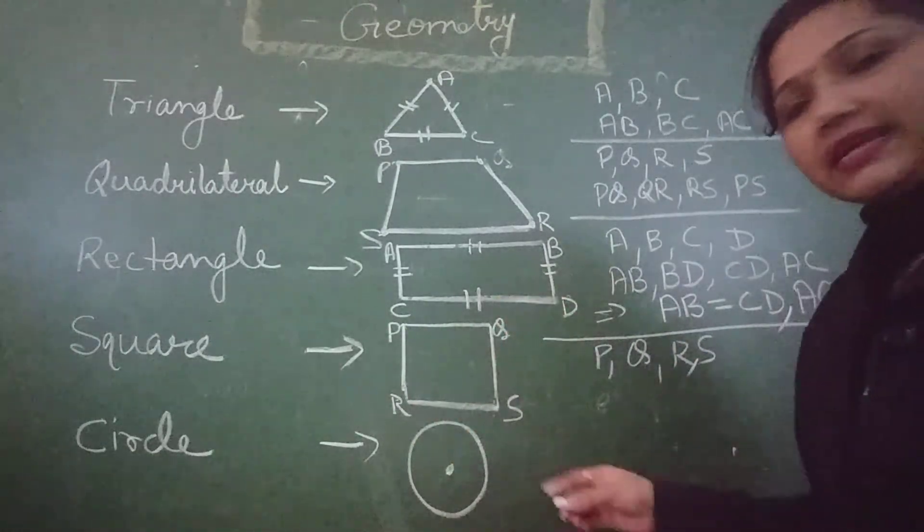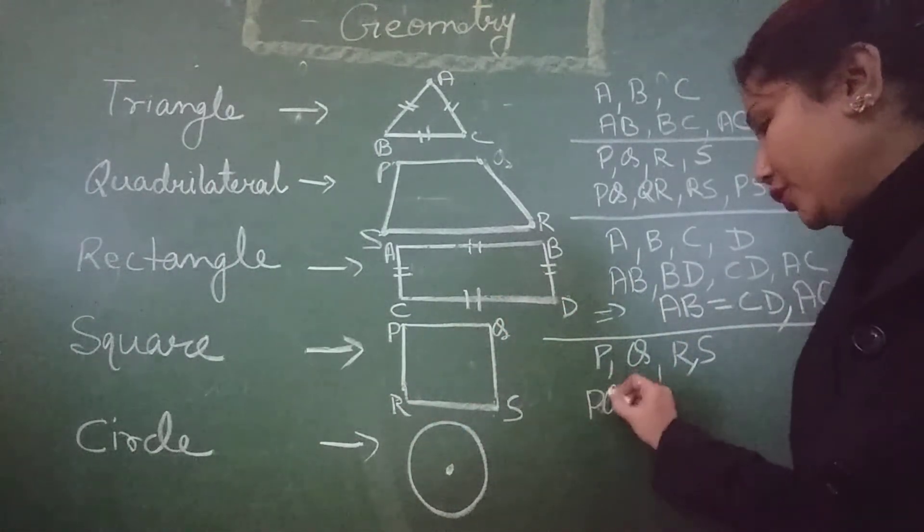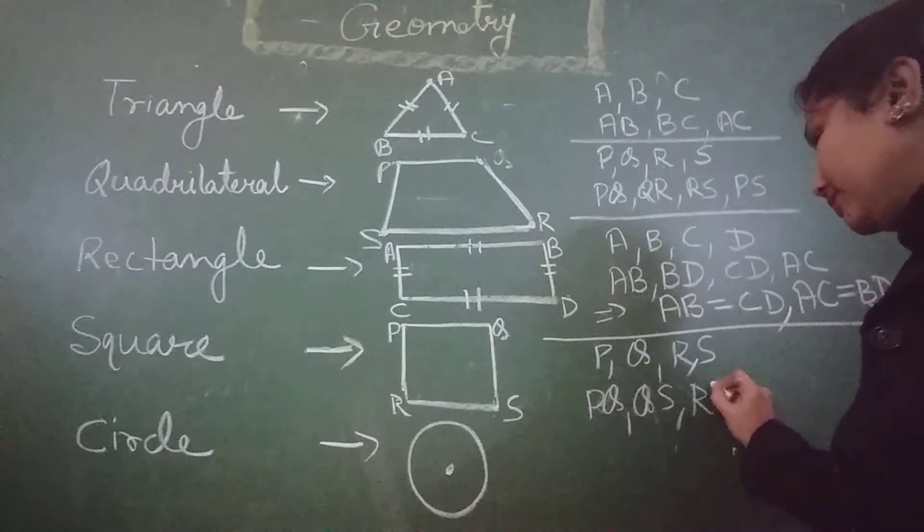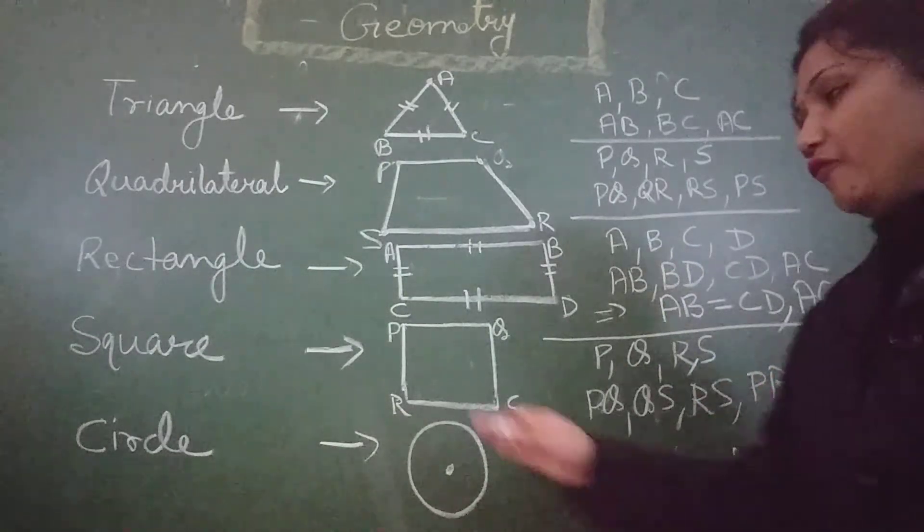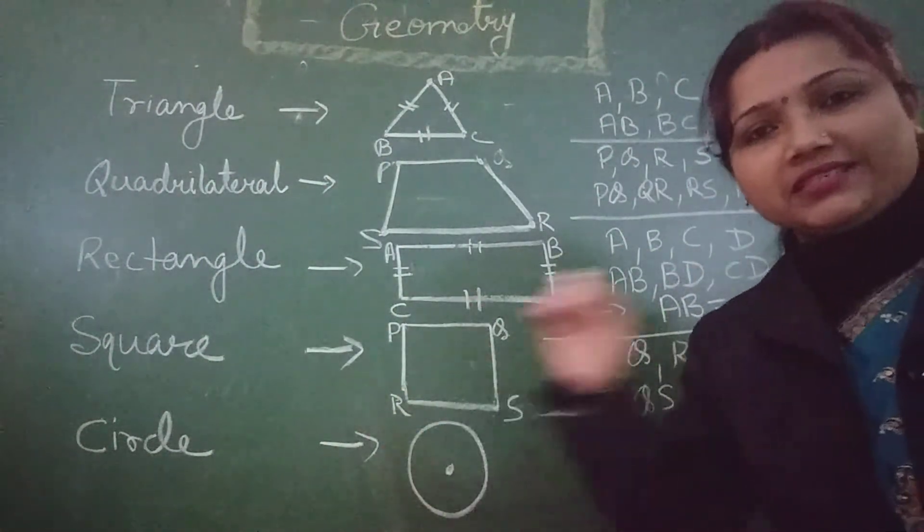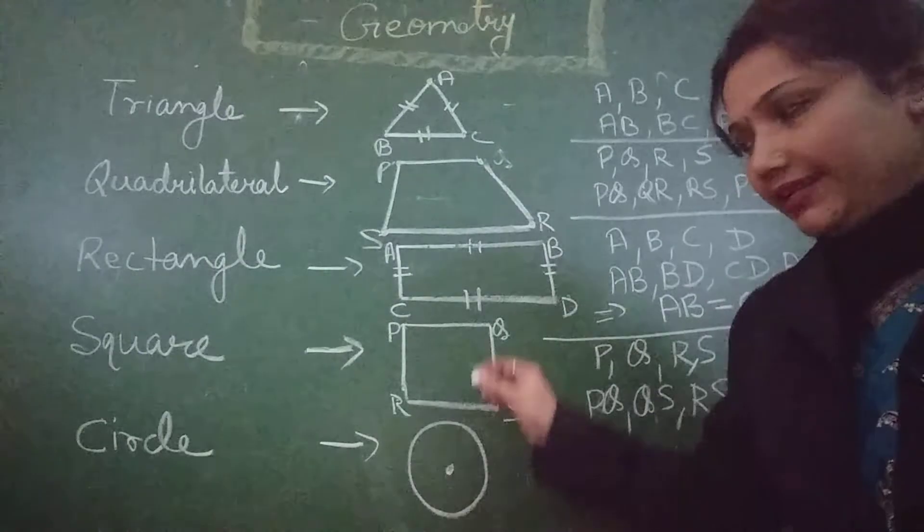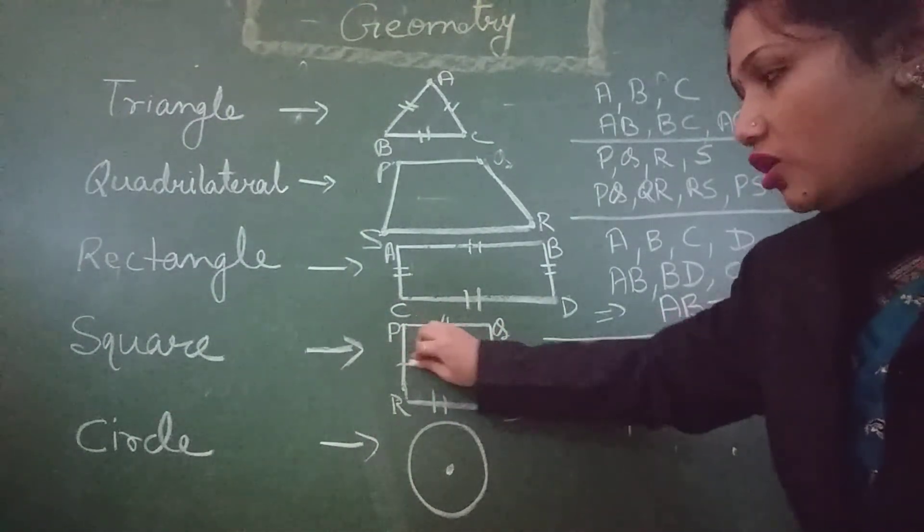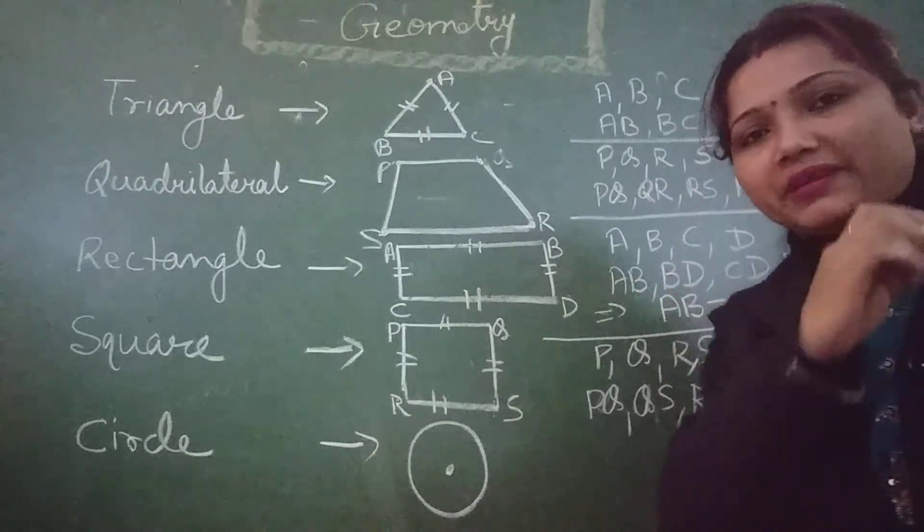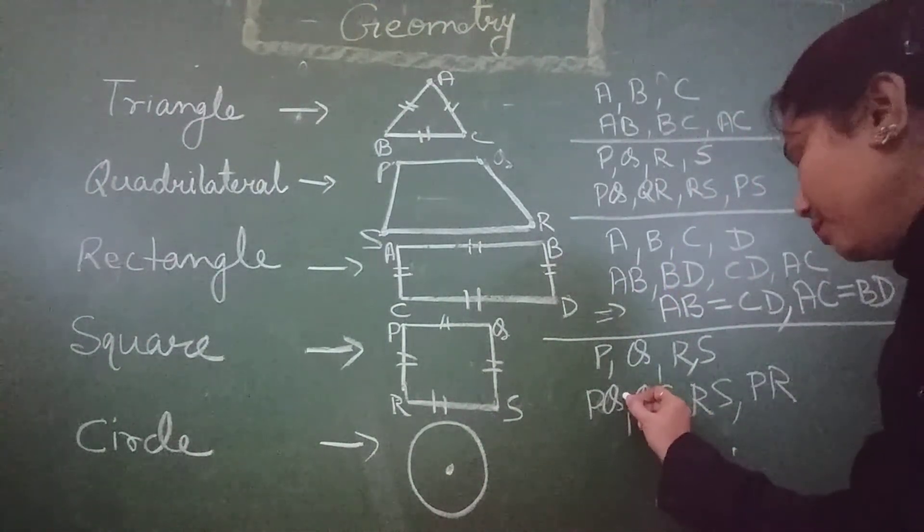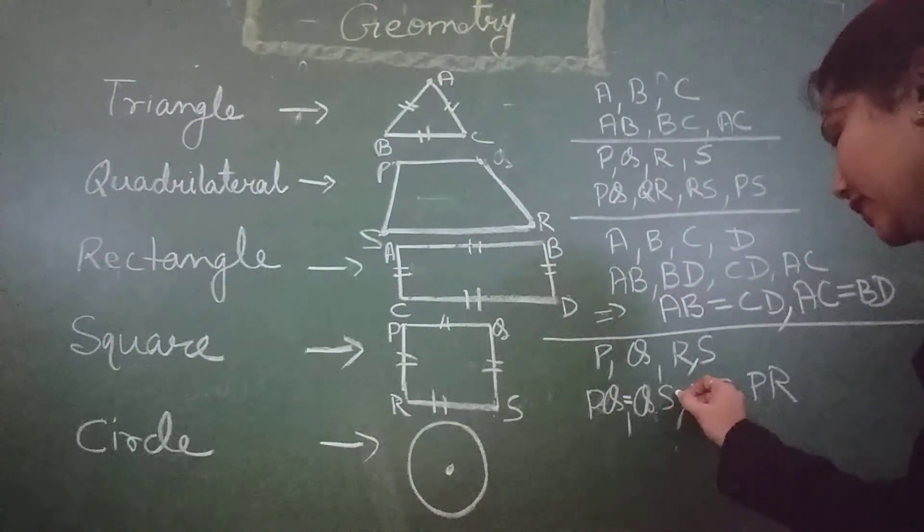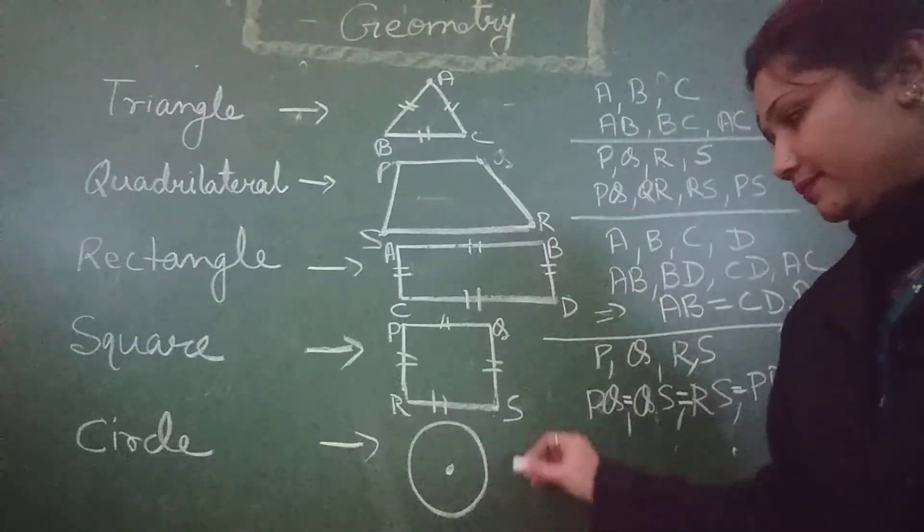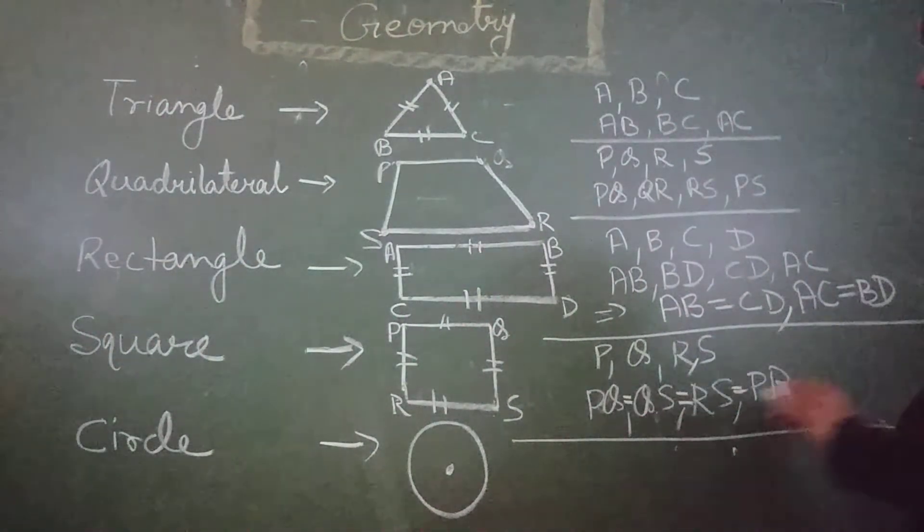And the sides are PQ, QR, RS and PR. And what have I told you, student, in case of a square, that all sides are equal to each other. All sides have same length. So, PQ is equal to QS, QS is equal to RS and RS is equal to PS.